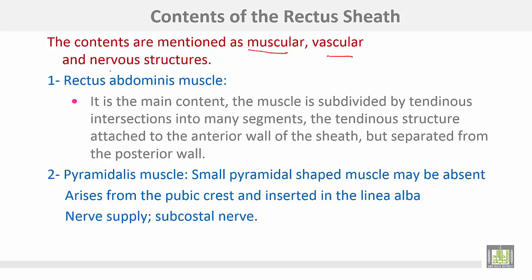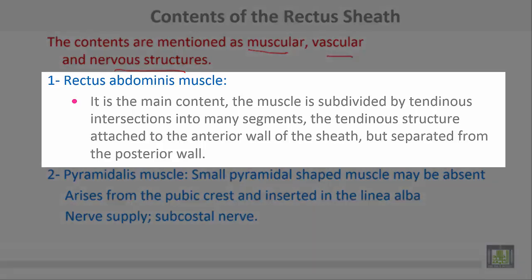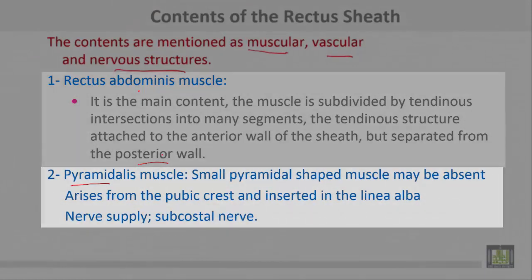The contents of the rectus sheath include muscular, vascular, and nervous structures. The muscular contents are the rectus abdominis muscle and the pyramidalis. The rectus abdominis is the main content, subdivided by tendinous intersections into segments; these intersections are attached to the anterior wall of the rectus sheath but separated from the posterior wall to allow passage of the superior and inferior epigastric vessels.